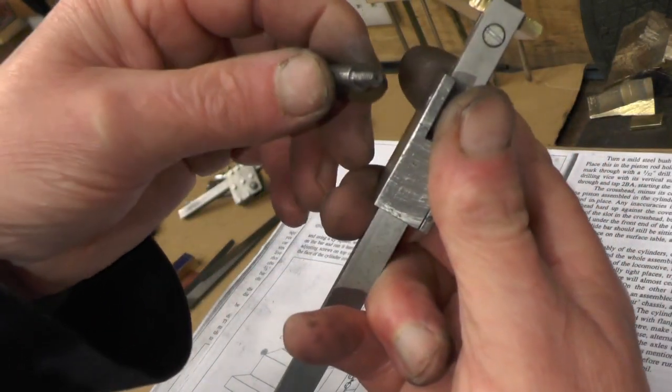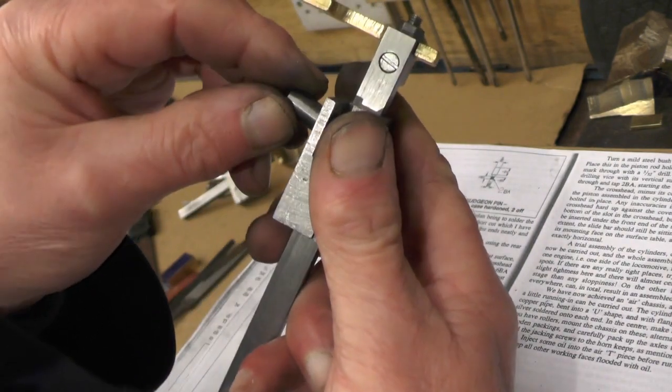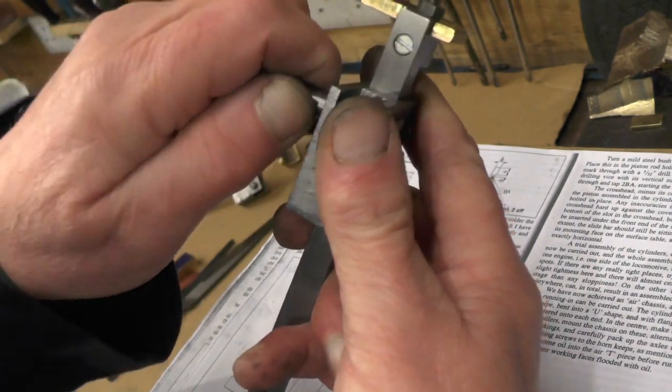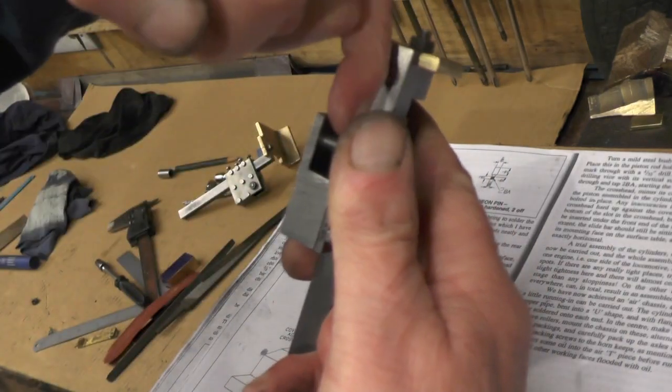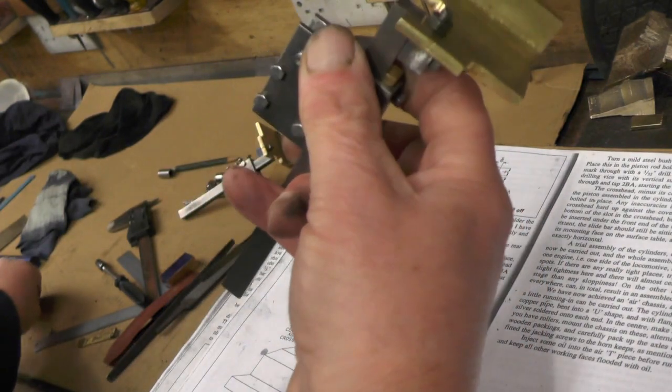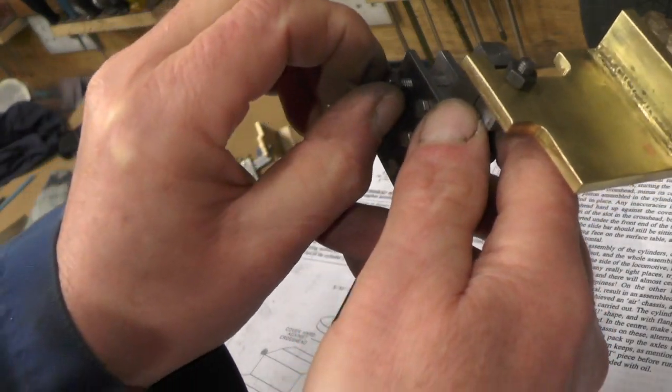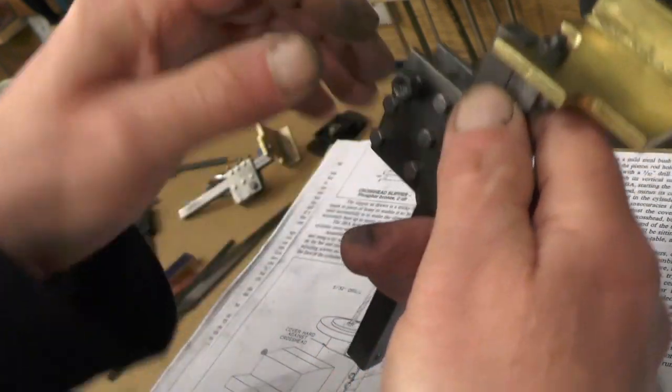And then that gudgeon pin is going to fit into cross head that way, obviously with the con rod connected in the middle, and then just a locking nut goes on. Now this interlocking nut it's just a temporary nut.